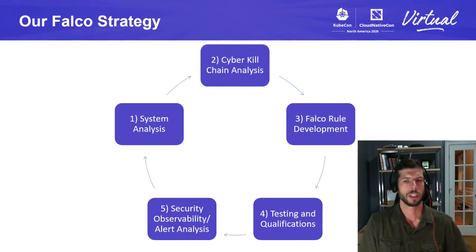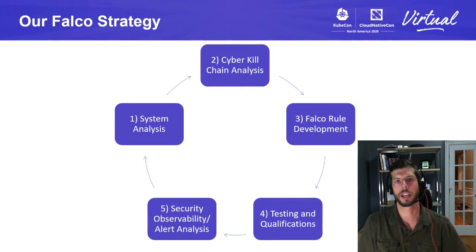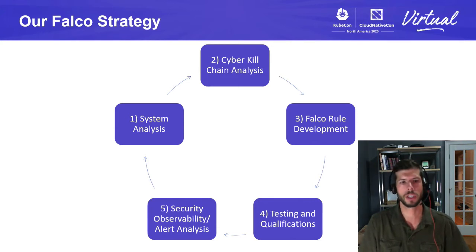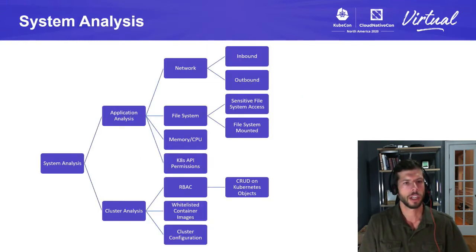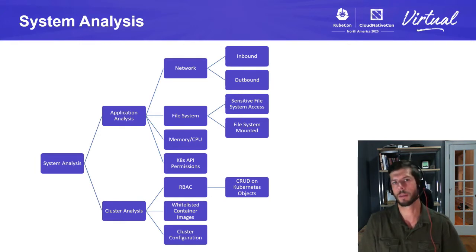We take an iterative approach to design our Falco rules to maximize security observability and reduce false positives. We have this cycle that constantly feeds itself — we're constantly analyzing our environment to better improve security prevention and detection. We follow this workflow to analyze our application both at the container and cluster level. The system can be very complex with a lot of moving parts and different services that you have to understand if you're going to build out your own Falco detections. System analysis can really help drive how you look at potential security risks in your environment.